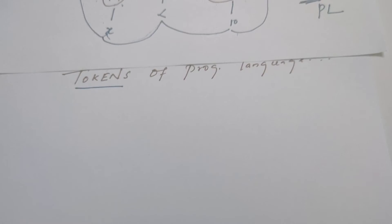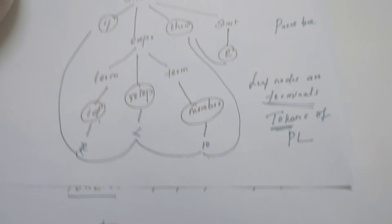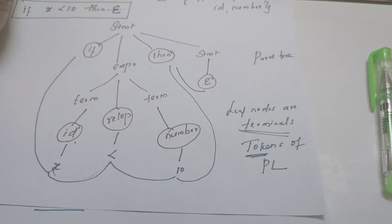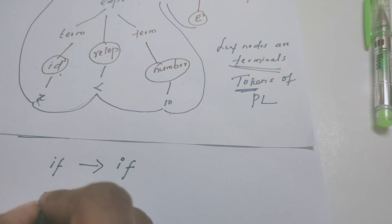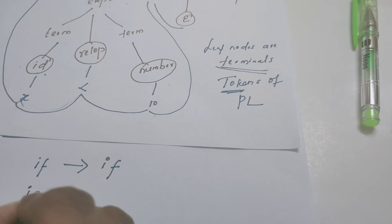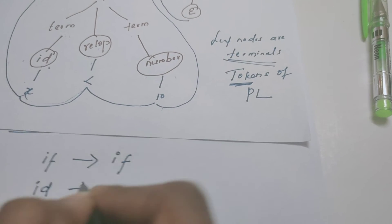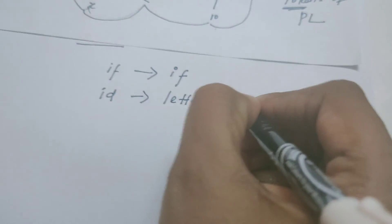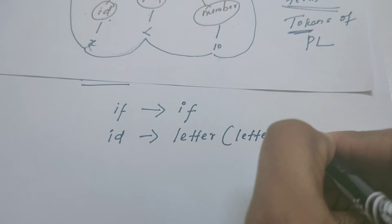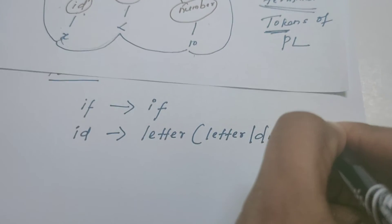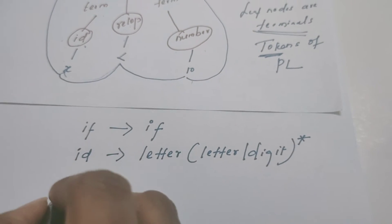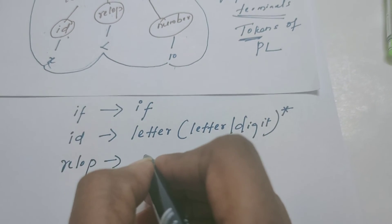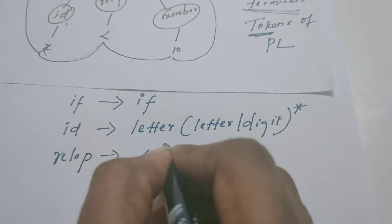Now let me consider only the leaf nodes. 'if' is a leaf node — the regular definition for 'if' contains two characters: i and f. Then 'id' is a terminal and a leaf node. An identifier can begin with a letter followed by any length of letters or digits, marked by the Kleene star operator. Relational operator is a token — for example, less than is a relational operator.